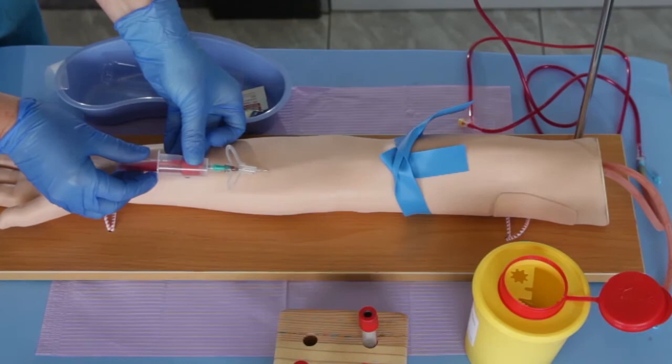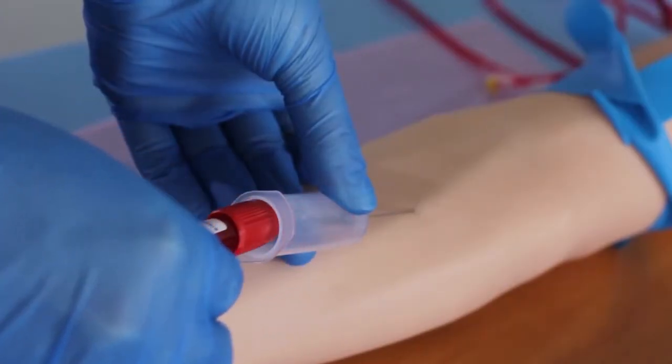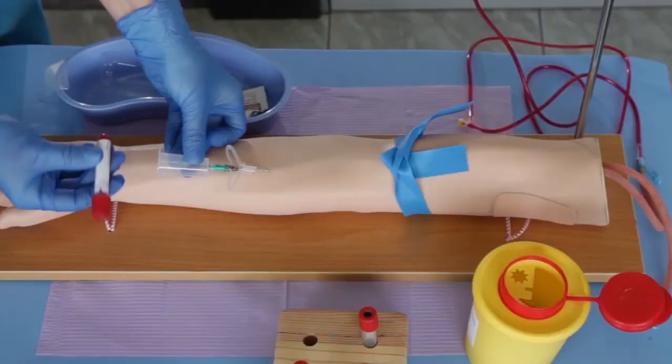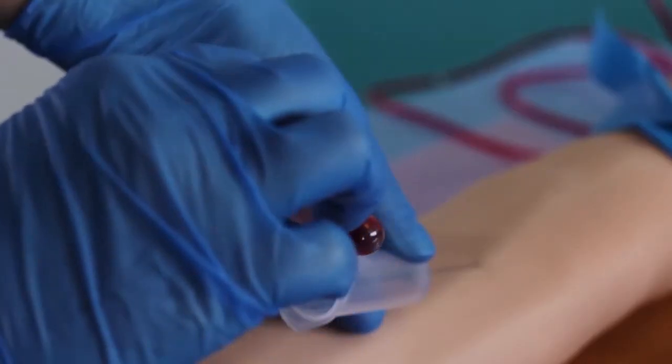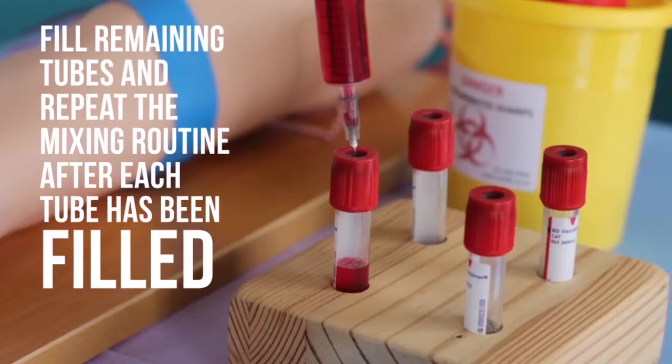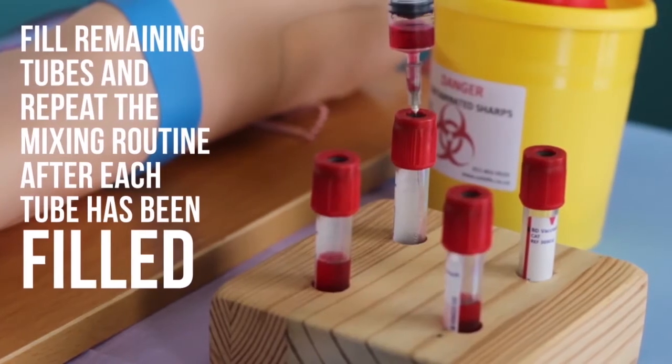When blood flow stops, remove the tube by holding the hub securely and pulling the tube off of the needle. If the tube used has additives, mix the contents by gently inverting the tube five to eight times. Do not shake. Fill remaining tubes and repeat the mixing routine after each tube has been filled.